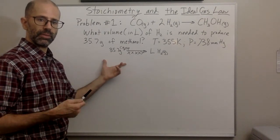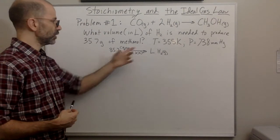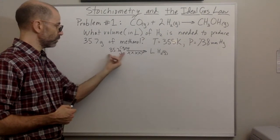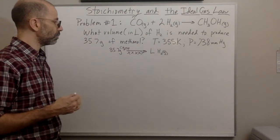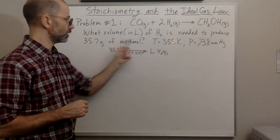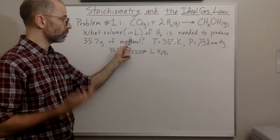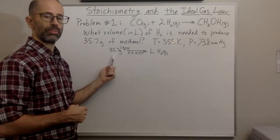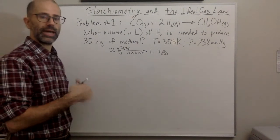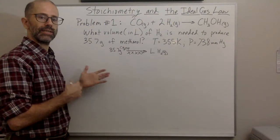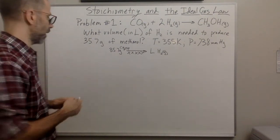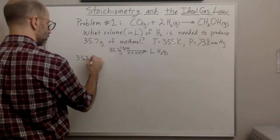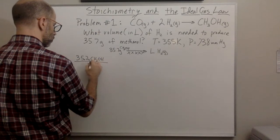I should be thinking: they're giving me mass in grams, I have a gas, they're giving me conditions — temperature and pressure — so I need to get to moles. I can convert grams to moles, and I also need to keep in mind that I'm looking for liters. The way I can get liters from an amount of gas is the ideal gas law. But first I'm just going to use the molar mass. So I'm starting at the mass of A. I'm going to write 35.7 grams of CH3OH over one.